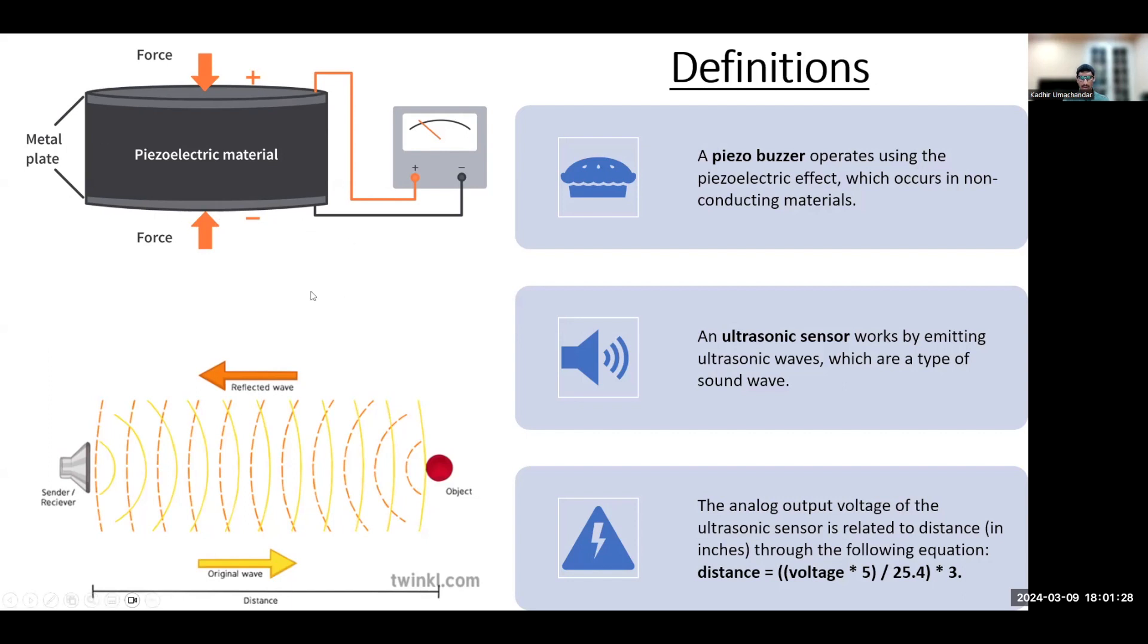An ultrasonic sensor works by emitting ultrasonic waves and when these waves hit an object as shown in this diagram they bounce back and the sensor outputs the distance between it and the object in terms of voltage. In order to convert this voltage to distance in inches we need to use this equation.